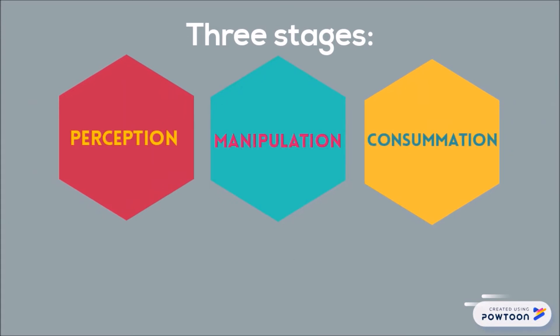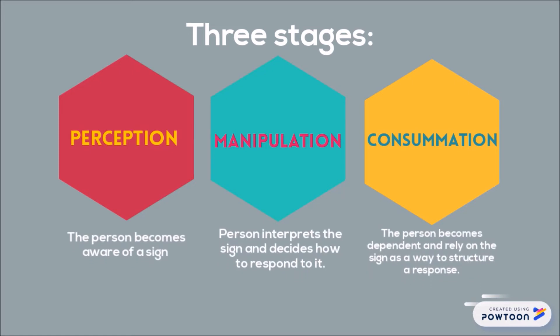Perception is when the person becomes aware of a sign. Manipulation is when the person interprets the sign and decides how to respond to it. Consummation is when the person becomes dependent on and relies on the sign as a way to structure a response.